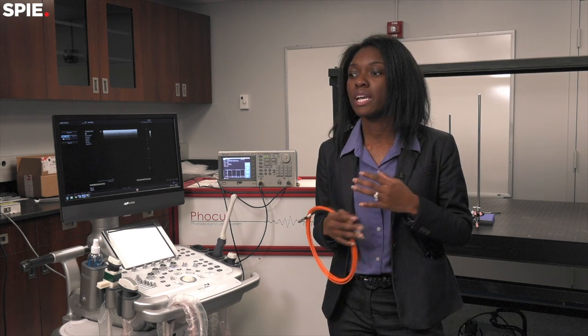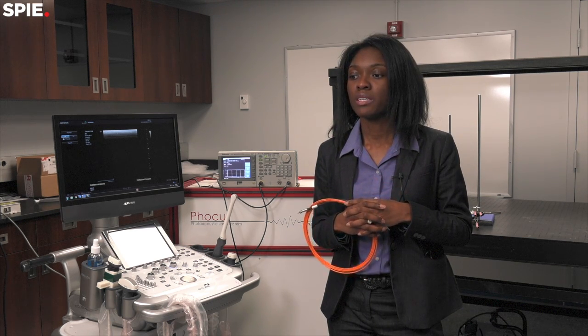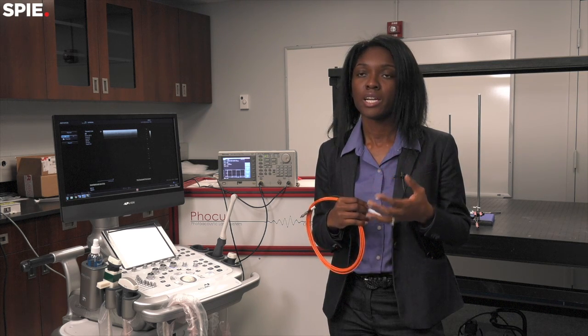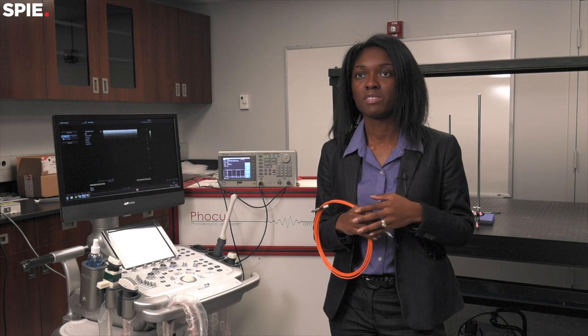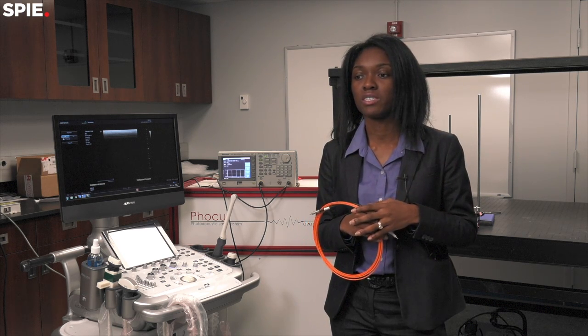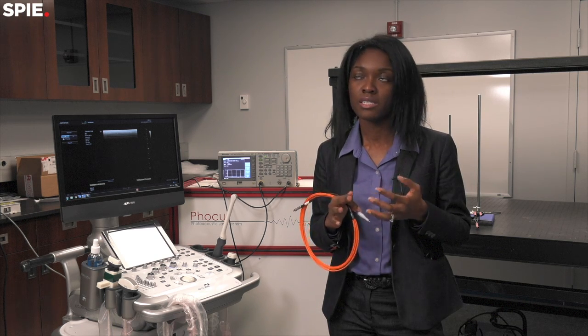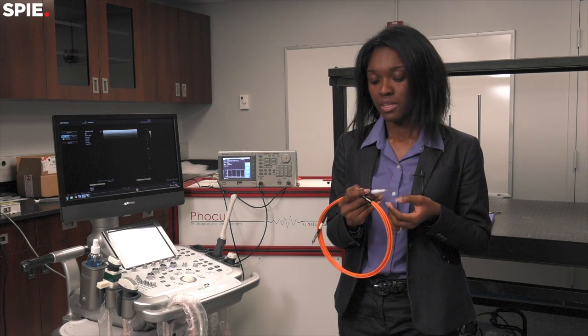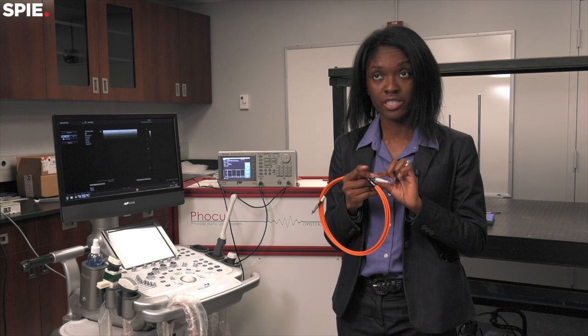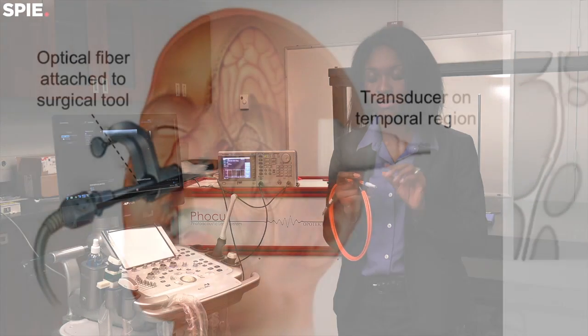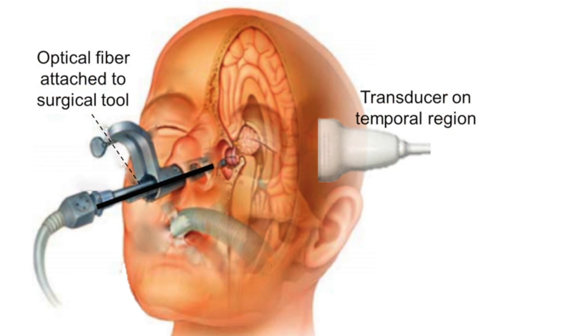We want to avoid cases like this by giving the surgeon the ability to see these major anatomical features at the time of surgery and avoid any complications that might have arisen because the surgeon was unable to see them. This is the actual surgical drill that's used to remove pituitary tumors through the endonasal approach. It's minimally invasive—it goes through the nose to remove that bone and remove the tumor.